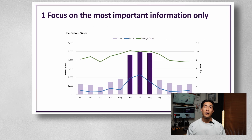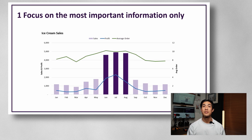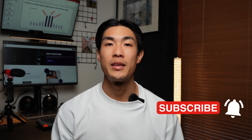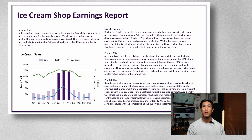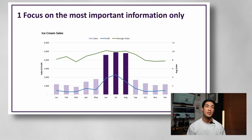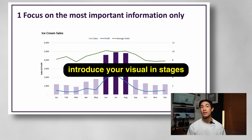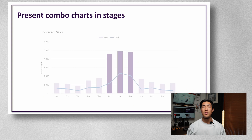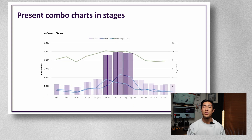For example, look at this combo chart, which has three elements — a column chart combined with two lines. Straight away, it's much harder to instantly understand and interpret the visual. Of course, there are times when you're creating visuals that will be circulated to a wider audience, and in these instances it's okay to include more complicated combo charts with the necessary context and messaging around it. But if you're presenting this data, you could just introduce your visual in stages and let your audience interpret the chart step by step — the sales column chart first, then the profit line, and then the average order size.